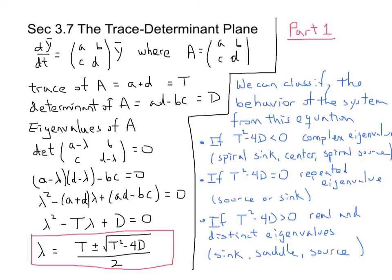We've seen sinks and saddles and sources, and then the case of the repeated eigenvalues, where solutions either approach or emanate away from a single line. And there are some other special cases where eigenvalues are zero, and they'll be included in the picture. But the major cases are the most important for us. And we're going to see how we transition from one case to another by looking at what's called the trace determinant plane.